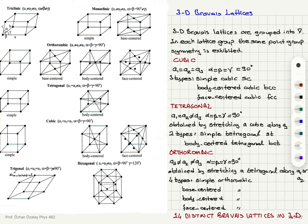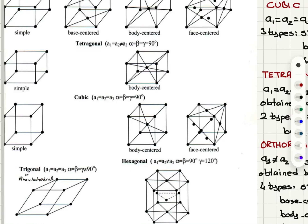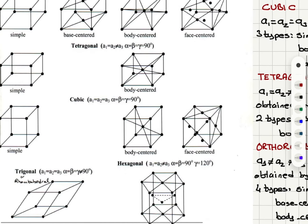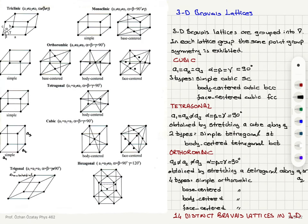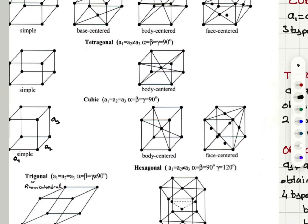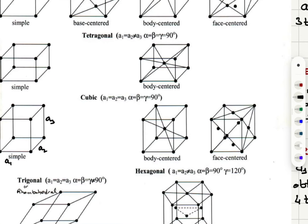Starting from cubic structure: a1 equals a2 equals a3, and the angles alpha, beta, gamma between a1, a2; a2, a3; and a1, a3 are all 90 degrees. We have three types of cubic structures.